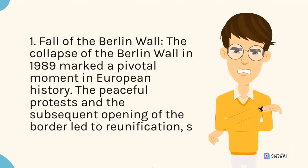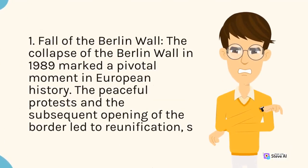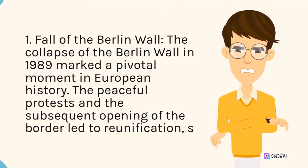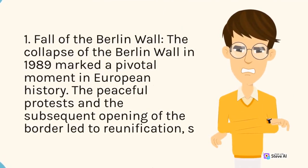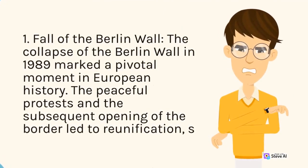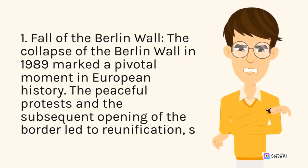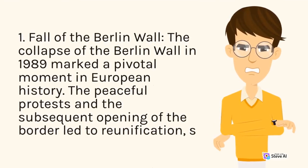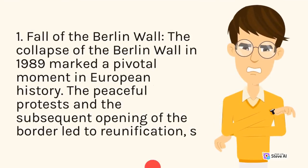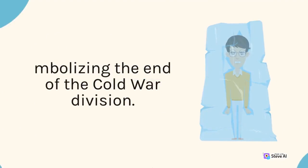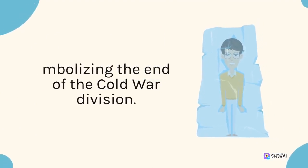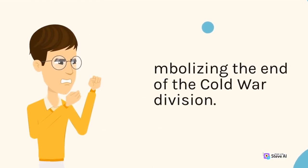The collapse of the Berlin Wall in 1989 marked a pivotal moment in European history. The peaceful protests and the subsequent opening of the border led to reunification, signaling the end of the Cold War division.